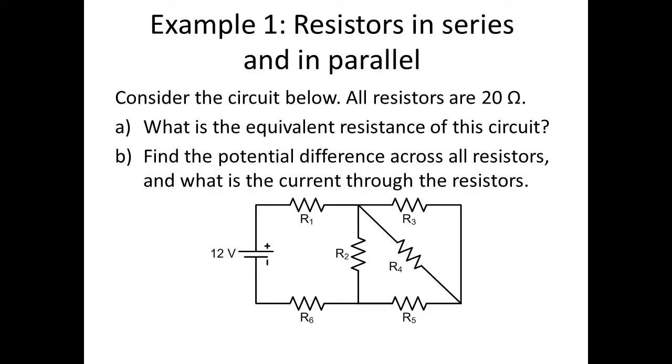And here is an example of resistors in series and in parallel. So if we look at the circuit on the picture, all the resistors are 20 ohms. Part A is to find the equivalent resistance of the circuit, and part B to find the potential difference, that is the voltage across all the resistors, and to find the current going through those resistors.